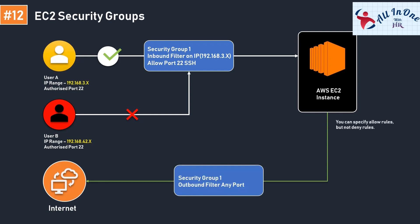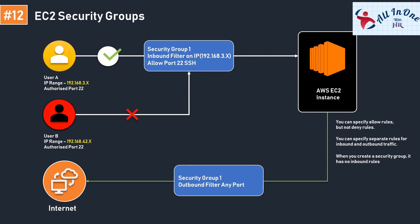A few key points to remember for the Solutions Architect exam: First, you specify allow rules, not deny rules — you set policies for what you allow users to access, not what you want to restrict. Second, you can specify separate rules for inbound and outbound traffic. When you create a security group, it has no inbound rules by default — until you add a rule, there is no way to access the machine. By default, a security group includes an outbound rule that allows all outbound traffic. When you create a security group, you must provide it with a name and a description.